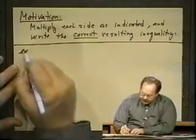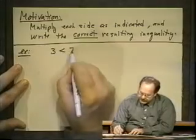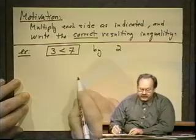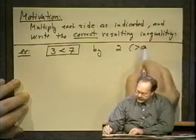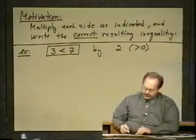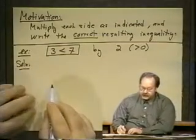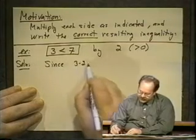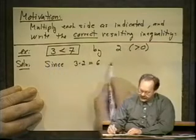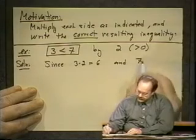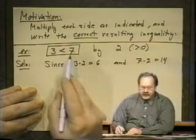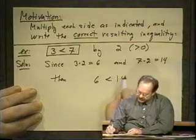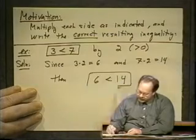Okay, so we will analyze this for two examples and that will suggest the next property. Here's the first one: three is less than seven. That's given to you and it's also clear. I want to multiply that by two, and let me remark here that two is a positive number, it is greater than zero. Well the solution is, let's do the multiplication on either side. Since three times two is equal to six, that's the left hand side, and seven times two is equal to 14, that's the right hand side, then six is less than 14, left and right, and the direction has...